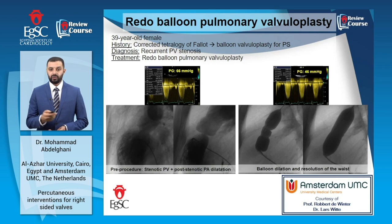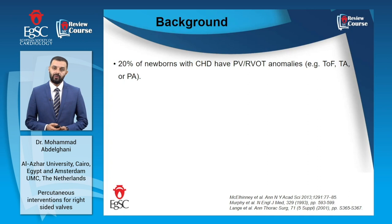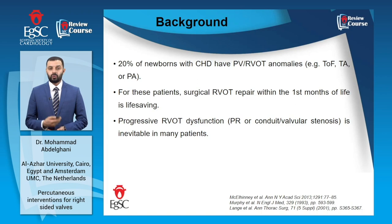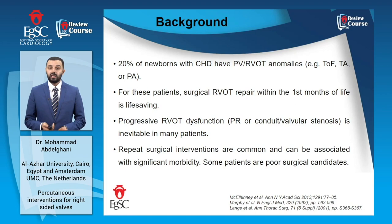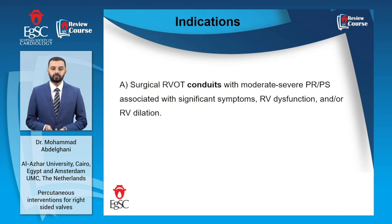Moving to transcatheter pulmonary valve implantation: up to 20% of newborns with congenital heart disease have some form of pulmonary valve or RVOT anomaly. Surgery is usually needed early in life to save life, but after surgical reconstruction of the RVOT and/or pulmonary valve, progressive RVOT dysfunction is inevitable in many patients. Accordingly, repeat surgical interventions are common and carry a heavy burden of morbidity. Some patients are not amenable to any surgical intervention due to prohibitive surgical risk. Therefore, transcatheter pulmonary valve implantation has been developed, basically targeting surgical RVOT conduits that are dysfunctioning with moderate to severe pulmonary regurgitation and/or stenosis.